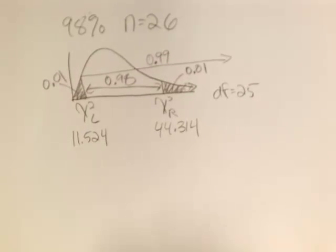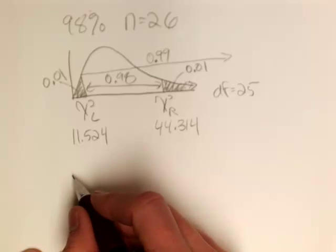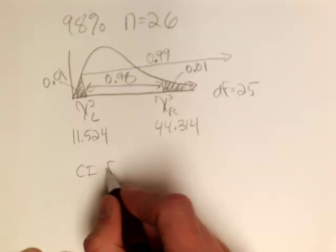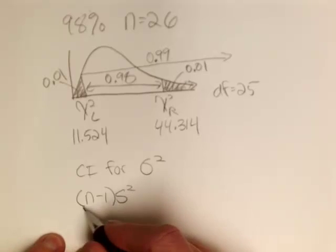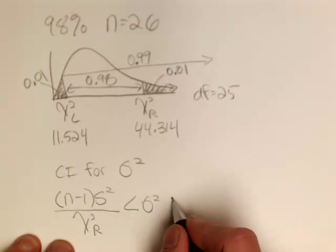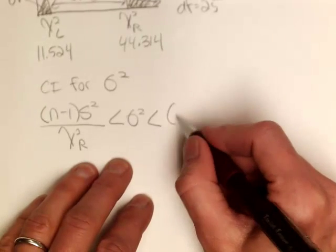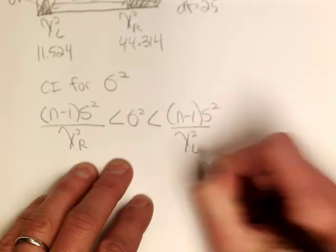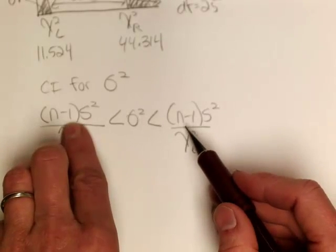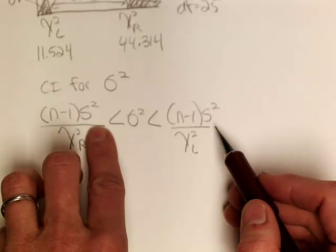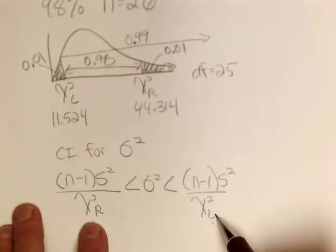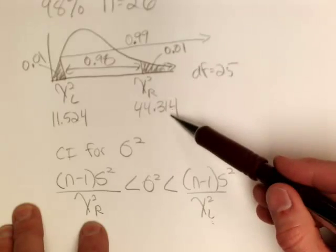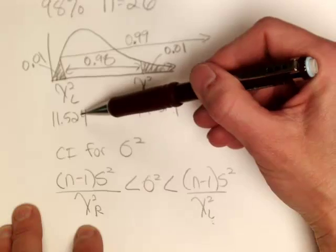I don't have enough information to fully construct a confidence interval because I'm not given the sample standard deviation. But let's review the formula: the confidence interval for variance is (n minus 1) times the sample variance over the upper critical value, to (n minus 1) times the sample variance over the lower critical value. So for this example, I'd put 44.314 in the denominator of the left endpoint and 11.524 in the denominator of the right endpoint.